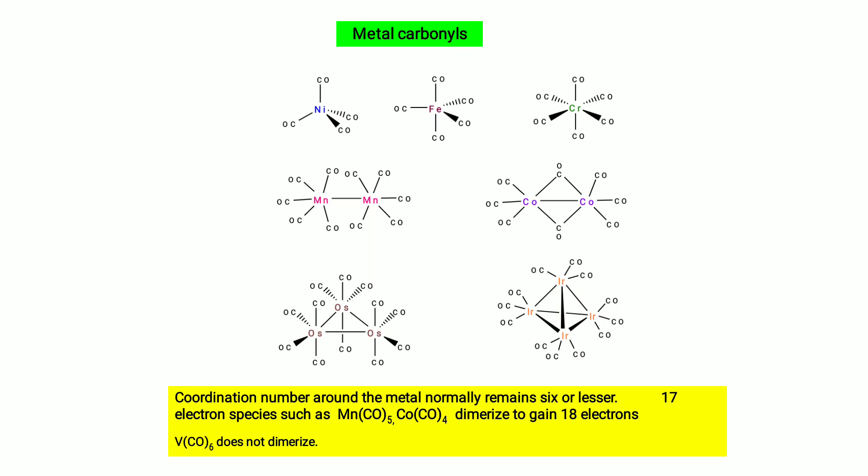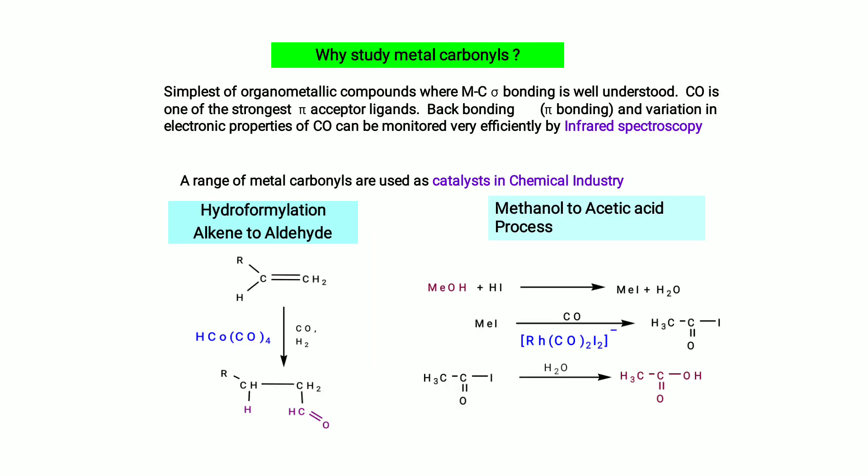For metal carbonyls, the coordination number around the metal normally remains six or less. Odd-electron species such as Mn(CO)₅ and Co(CO)₄ dimerize to gain 18 electrons, while V(CO)₆ does not dimerize. Metal carbonyls are the simplest organometallic compounds where M–C sigma bonding is well understood. CO is one of the strongest pi-acceptor ligands (back bonding). Variation in electronic properties of CO can be monitored efficiently by infrared spectroscopy. Metal carbonyls are used as catalysts in industry — for example in hydroformylation (alkene to aldehyde) and methanol to acetic acid.